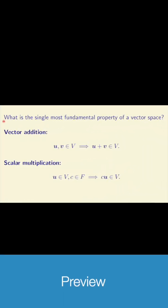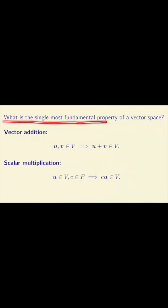The first question is: what is the single most fundamental property of a vector space? Well, a vector space is a set where you can add vectors together and multiply them by scalars, and the results are still in the set.